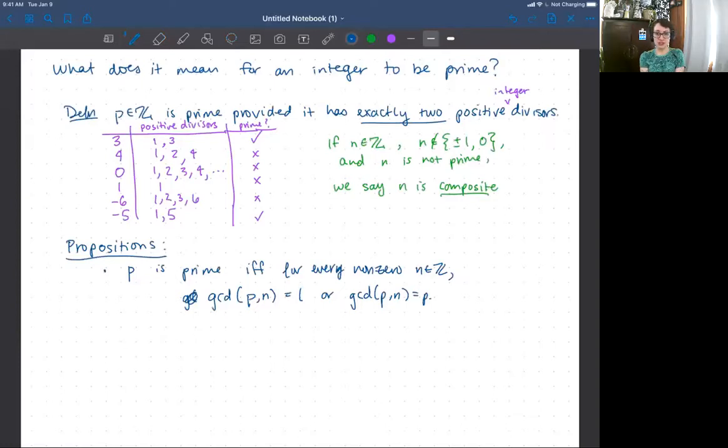And the way that we would prove this from the definition is we would say, all right, well, the only divisors that P has are one or P. And let's just say for this case that we're working with a positive P. So the greatest common divisors of P and anything are either going to be one or P. QED, right? That's it. And if the greatest common divisors of P and anything are just one and P, that means that the only possible divisors P can have are going to be one and P. QED the other way. So that's one proposition.